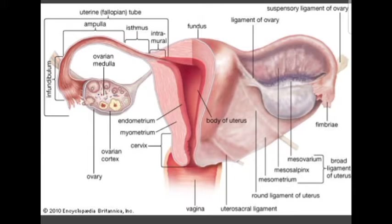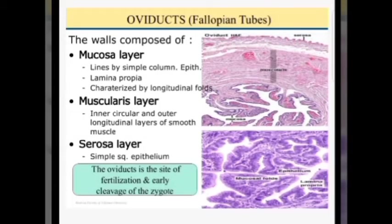Here lies the fallopian tube. You can see these are the fimbriated end, this is the infundibulum, this is the ampulla, and then there is the isthmus — the narrow portion — and then the intramural part of the fallopian tube which is passing through the wall of the uterine cavity.